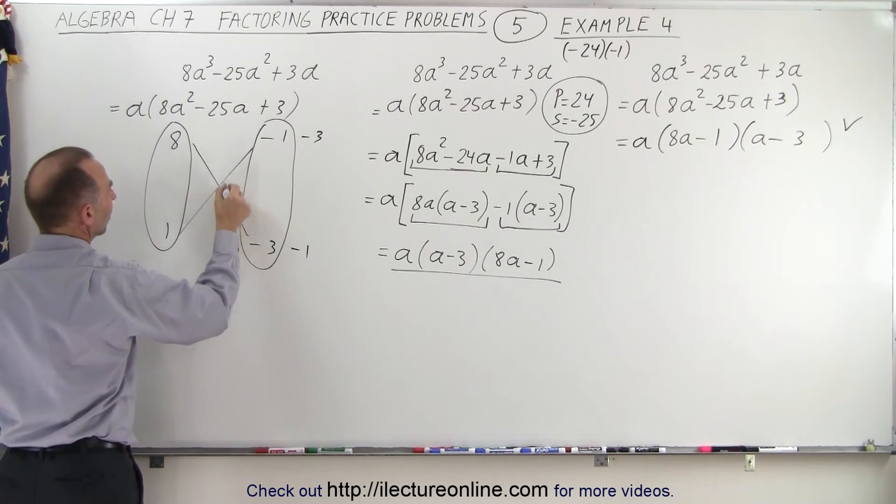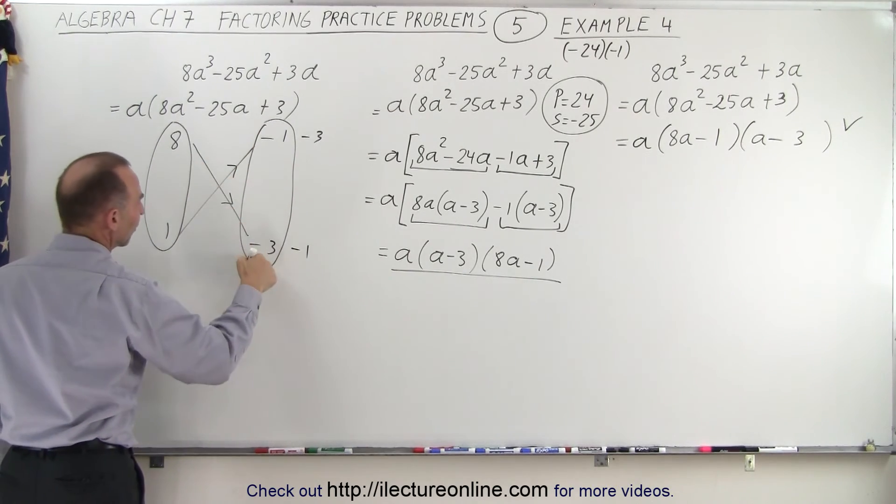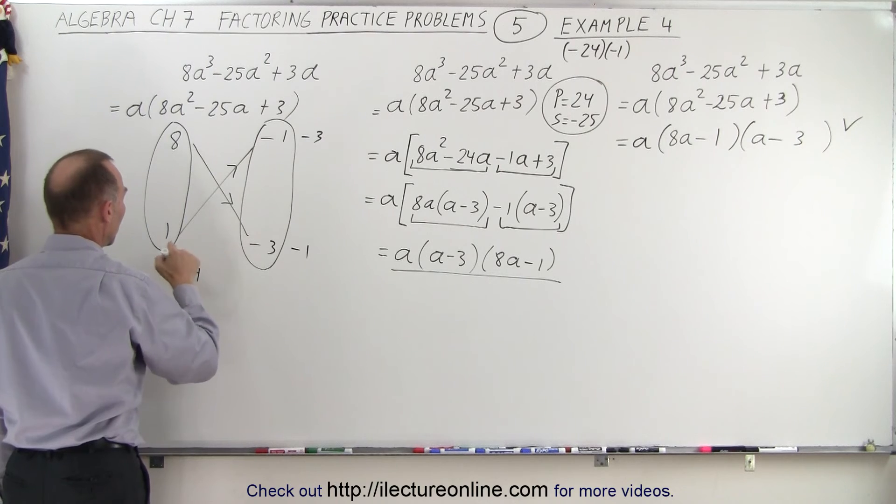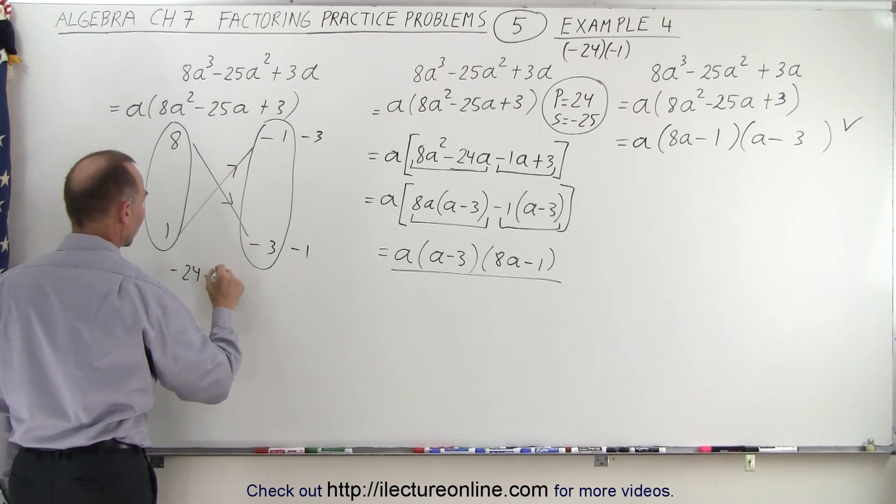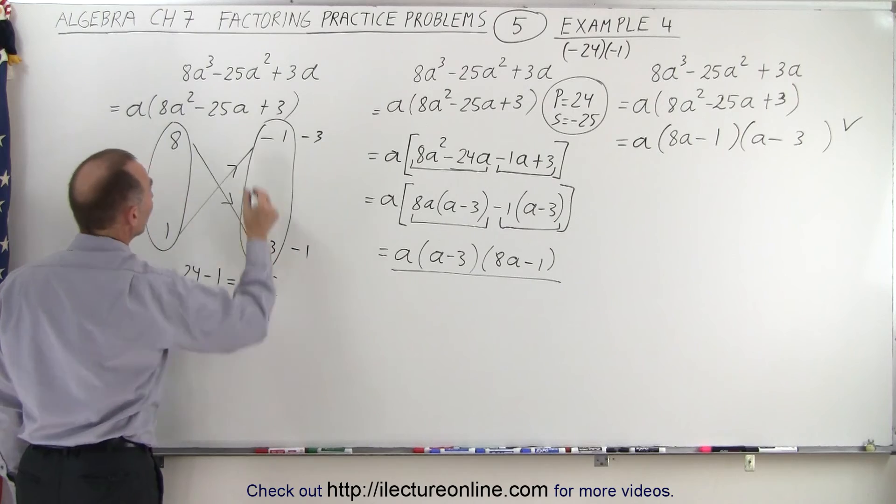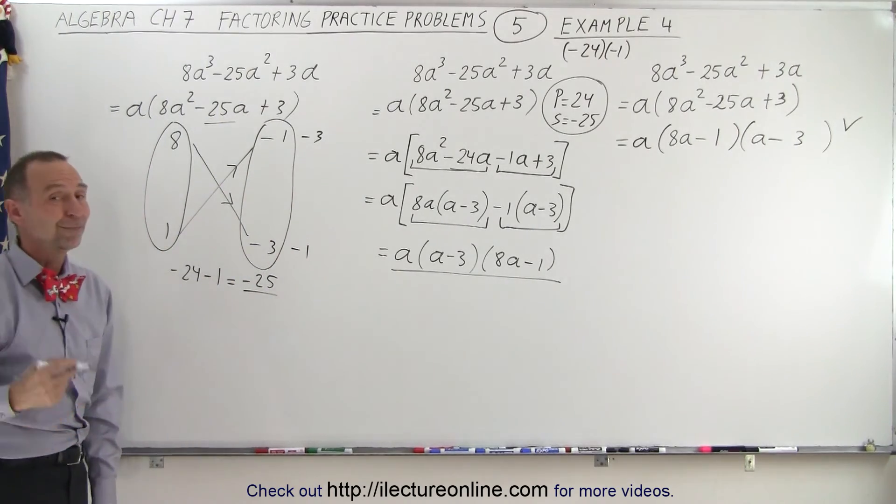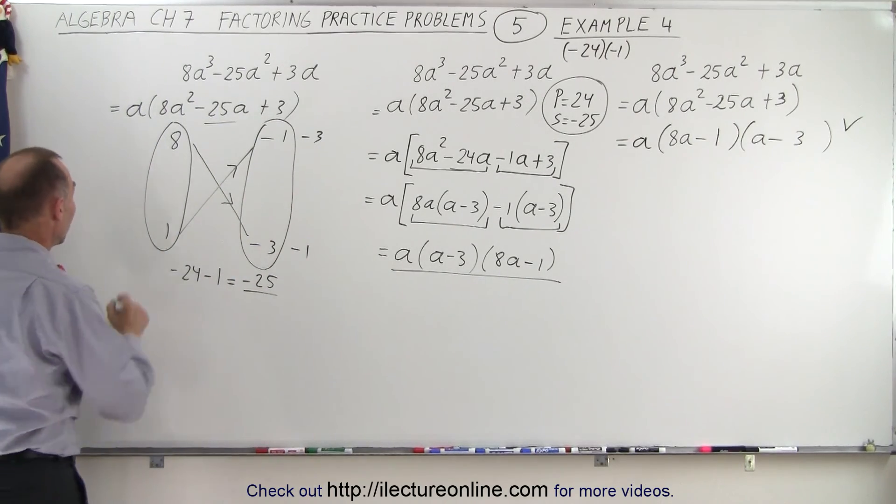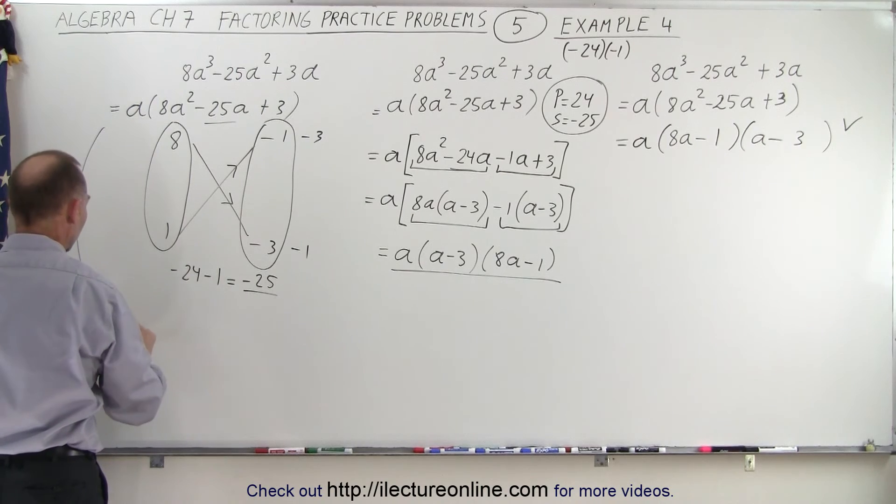And notice when I multiply, 8 times negative 3 gives me negative 24. 1 times negative 1 gives me minus 1. That adds up to minus 25, which is the middle term I'm looking for. And so I found the right combination.